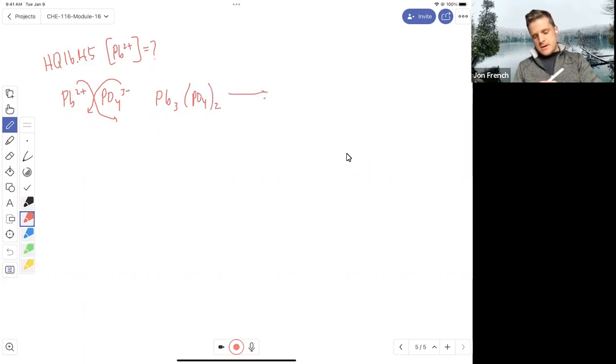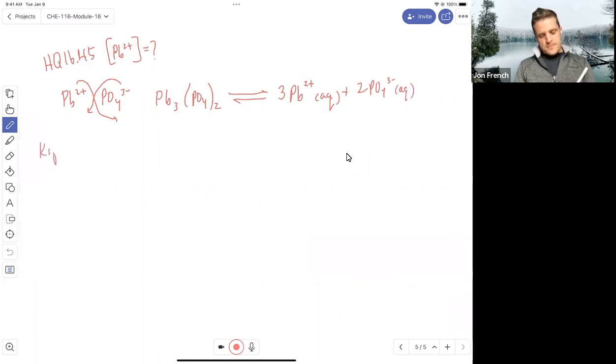So when that ionizes, we're going to get three lead pluses, Pb2+ aqueous, and we're going to get two phosphates PO4 3- aqueous. So the Ksp for that would be the concentration of lead cubed times my concentration of phosphate squared.